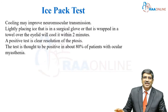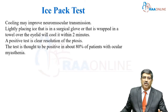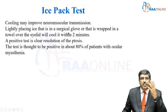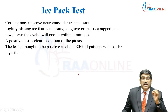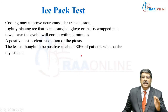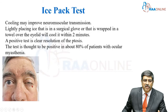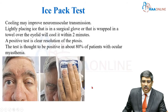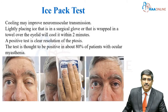Coming to the ice pack test, which is very similar to the edrophonium test. Instead of injecting edrophonium, you keep an ice pack on the eyelid. The cooling may improve neuromuscular transmission, so if you place this ice pack over the eyelid, the patient will become absolutely normal within 2 minutes. The test is positive in more than 80% of patients with ocular myasthenia. Here you have the drooping of the eyelid — ptosis is present — and the ice pack is kept over the eyelid for 2 minutes, which improves neuromuscular transmission and the patient becomes normal within 2 minutes.